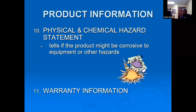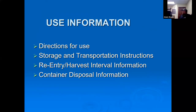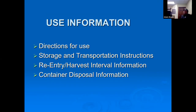A physical and chemical hazard statement tells you if the product might be corrosive to equipment. Warranty information tells you who to contact if the product fails. Through the label you'll also find directions for use: what pests it treats, how much to use, storage and transportation instructions, reentry or harvest intervals, and container disposal — can it be burned, thrown in trash, or what do you do with leftover product?